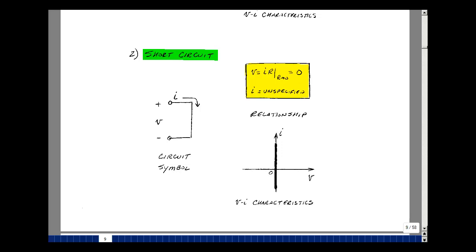In other words, the current is arbitrary or unspecified. We could graph this again with voltage on the x-axis, current on the y-axis, and we have a value of zero volts whether the current is positive or negative or zero.